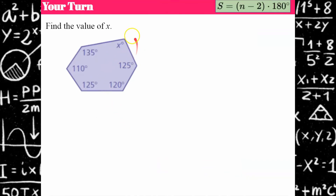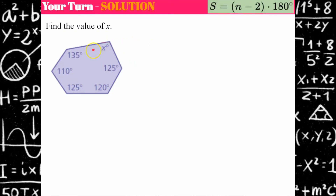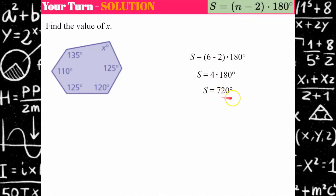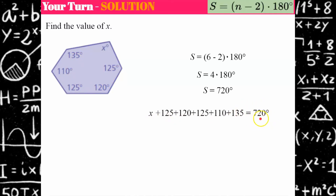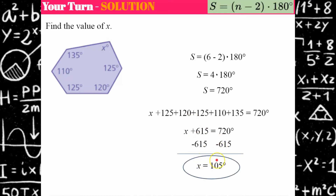Your turn — pause and find the value of x. Welcome back. Counting the sides, I get six — a hexagon. 6 - 2 = 4, times 180 = 720 degrees. Write the equation: x plus the five other angle measures equals 720. Adding those five angles gives 615. Subtract 615 from both sides — x equals 105 degrees.